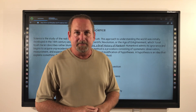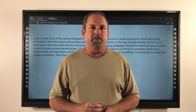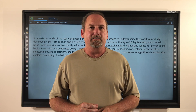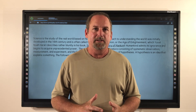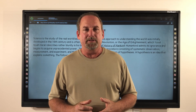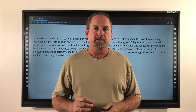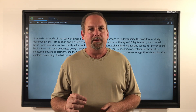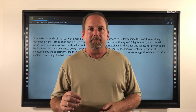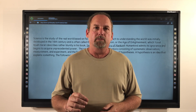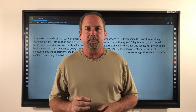Science is the study of the real world based on fact and truth. This approach to understanding the world was initially developed in the 16th century and is often called the Scientific Revolution or the Age of Enlightenment, which Yuval Noah Harari describes rather bluntly in his book Sapiens, A Brief History of Mankind, concerning the Age of Enlightenment: quote, humankind admits its ignorance and begins to acquire unprecedented power.